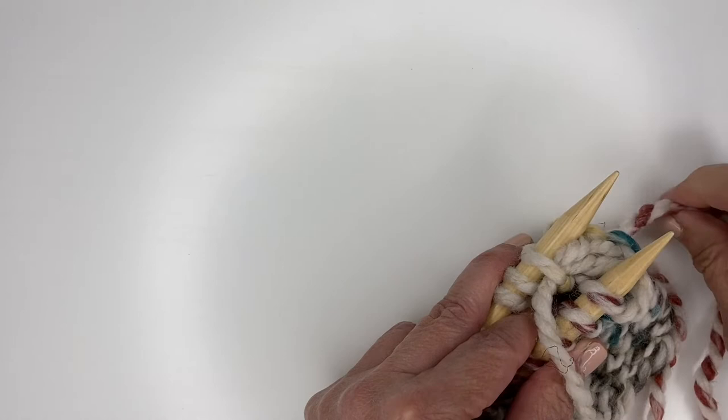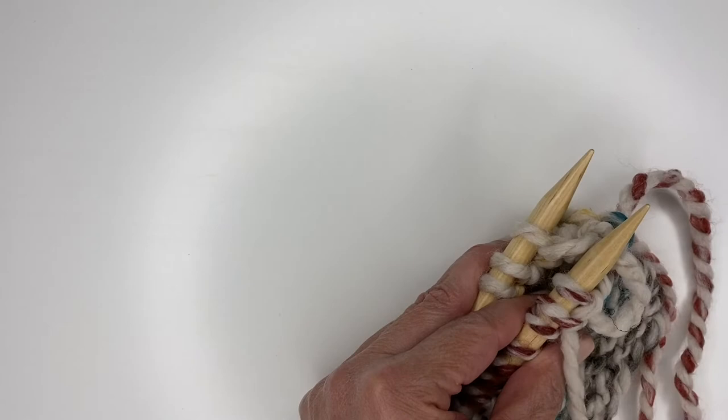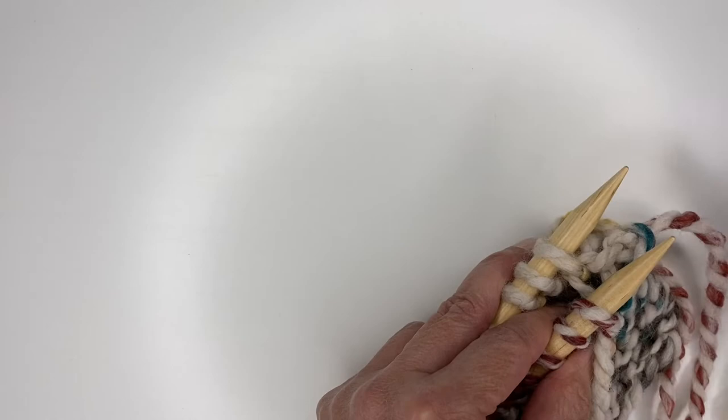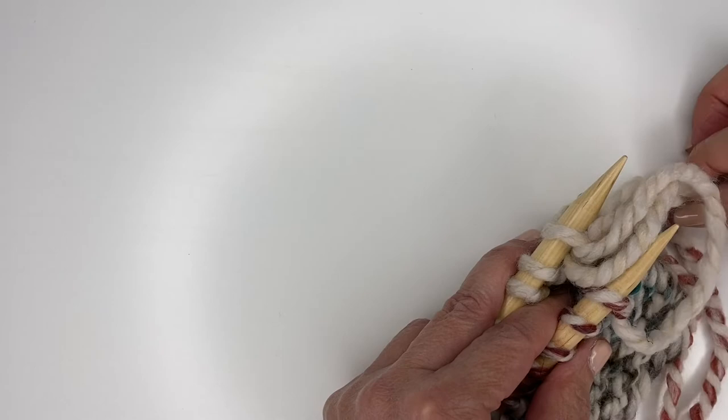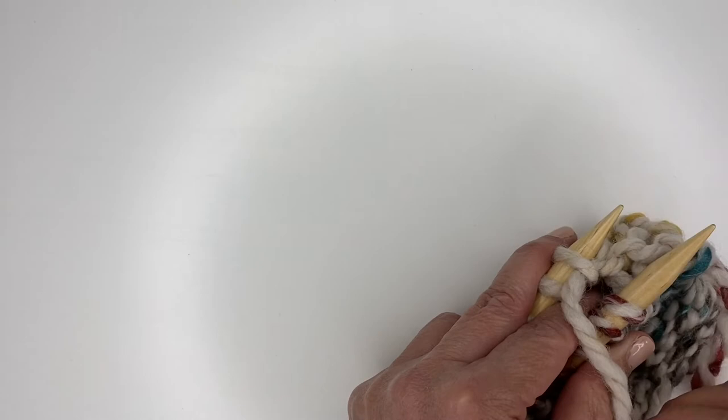So you knit off, purl on, slip this one off and just adjust the tension, always making sure that yarn is behind. So that will be knit off and purl on, and slip that off. You're going to keep doing this all the way across to the end and I'll meet you there and show you what to do with the last stitch.